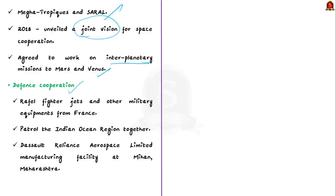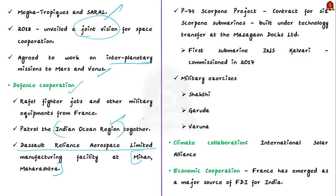Next comes defense cooperation. Indo-French defense cooperation is robust. We all know about the Rafale fighter jets, which were brought from France. India also buys other military equipment from France. France is the first and only country with which India has partnered to patrol the Indian Ocean region. Additionally, the Dassault Reliance Aerospace Limited Manufacturing Facility at Nagpur in Maharashtra is a joint venture between India's Reliance Group and French aerospace company Dassault Aviation.